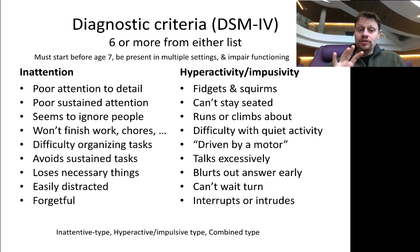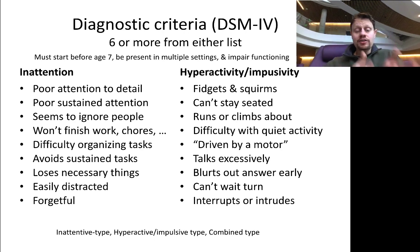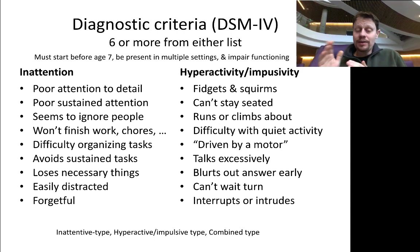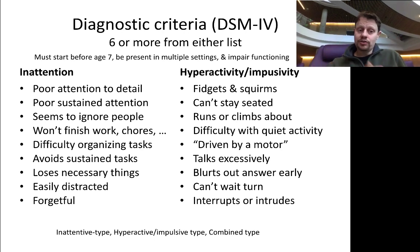Nobody gets a diagnosis of just ADHD — instead, people are diagnosed with ADHD of one of three types. The first type is called the inattentive type: that is if you have six or more from the left list and five or fewer from the right list. In that case, your ADHD is primarily characterized by attentional deficits, so it's called inattentive type.